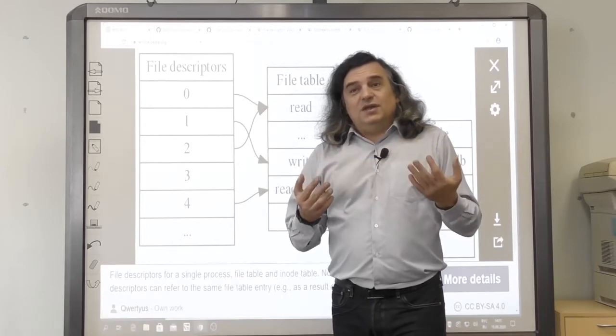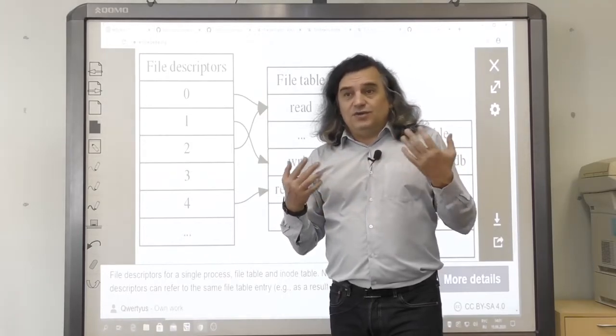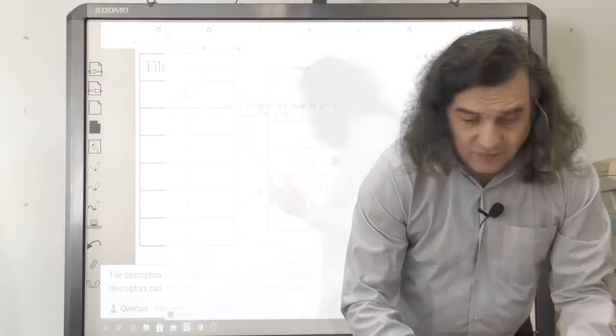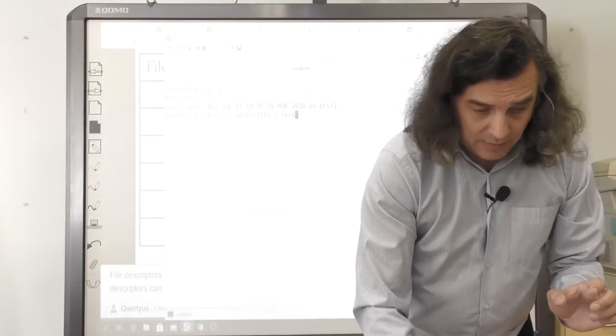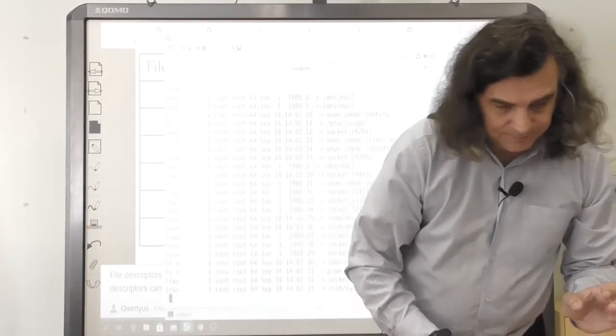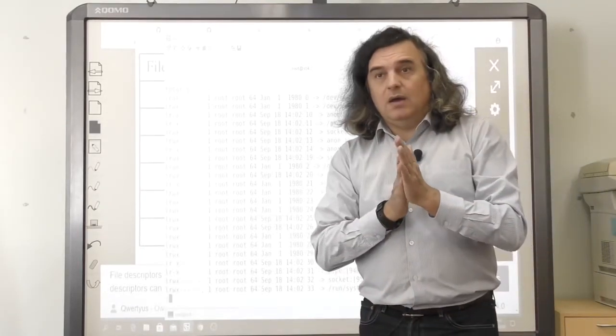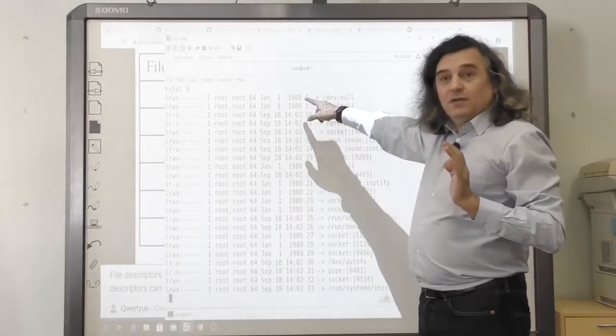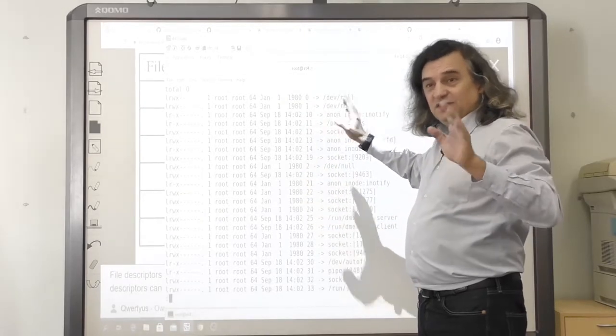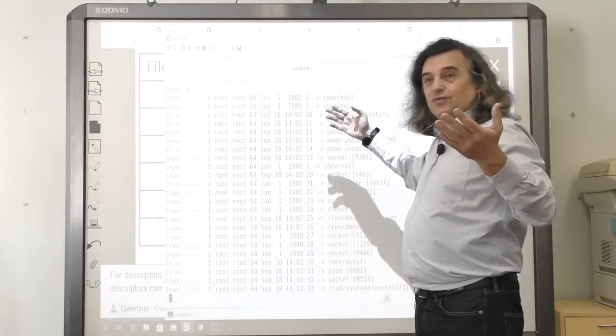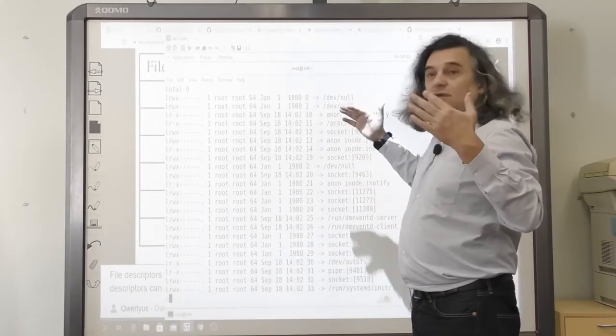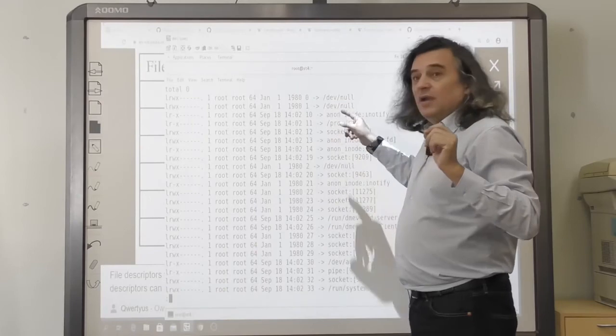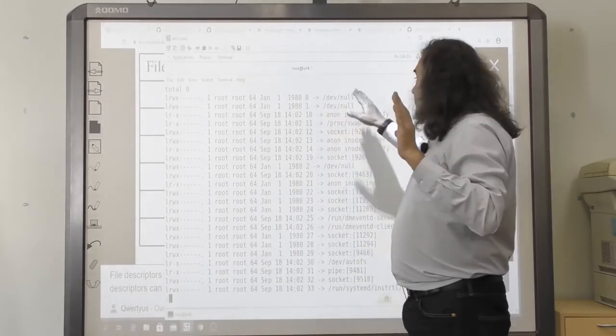On Linux, you can see this table for each process in the PROC file system for the first process in it. As we can see, STD-in and STD-out are simply redirected to dev null special device and STD-error does not open.